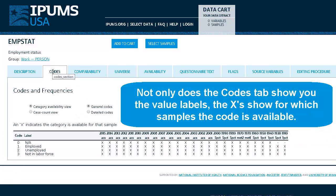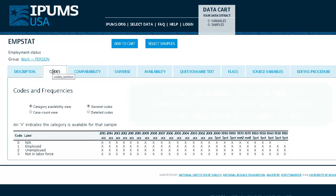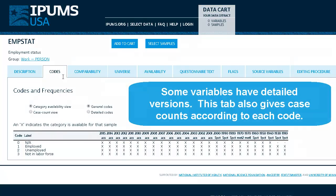Not only does the Codes tab show you the value labels, the X's show for which samples the code is available. Some variables have detailed versions. This tab also gives case counts according to each code.